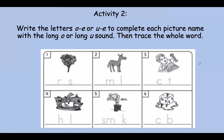Now we're moving on to activity two. For this activity, we're going to write the letters O consonant E or U consonant E to complete each picture name with the long O or the long U sound, and then trace the whole word. So we're doing the same thing as before, but this time with long O and long U. Number one is a picture of a rose. What do you hear in the middle? Rose. Is it long O or long U? Say it slow. Rose.